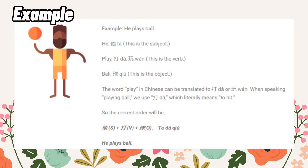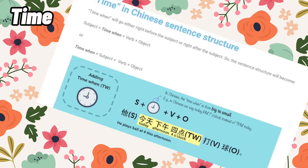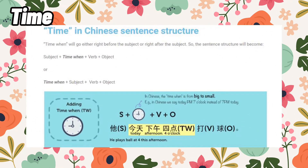Note that in English, the verb will change according to the subject and the tense. In the example above, 'he' is the reason the verb 'play' needs to add an S. In Chinese, we do not change the form of the verb. For time, in Chinese sentence structure, the time when will go either right before the subject or right after the subject. So the sentence structure becomes subject plus time when plus verb plus object, or time when plus subject plus verb plus object.